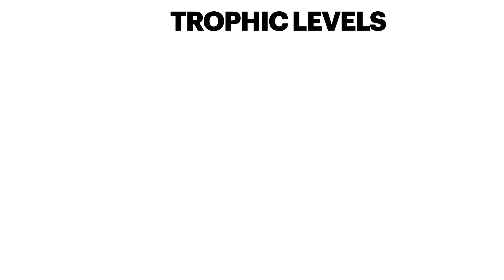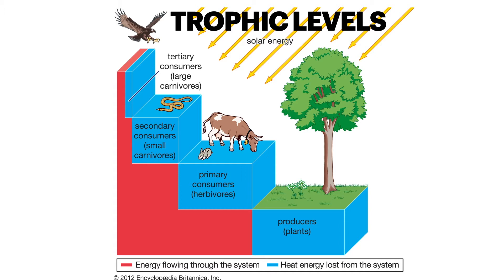To better understand an ecosystem, sometimes you must look at the trophic levels. Trophic levels are different levels of the food web or food chain, starting at the base with the producers, then the primary consumers, and on up the chain. There's also one element not shown here: the decomposers, which include not only fungus, but other detritivores such as worms, mealybugs, and flies.